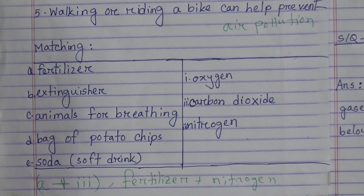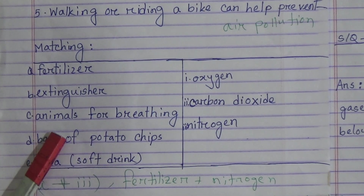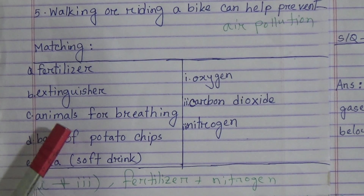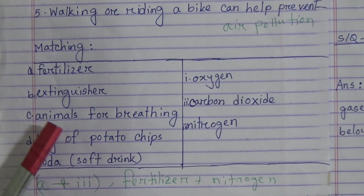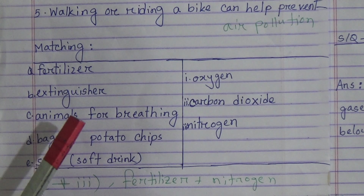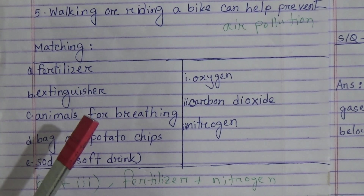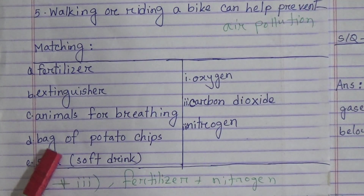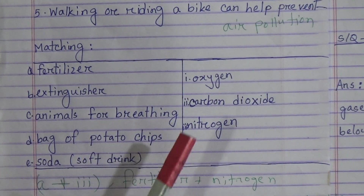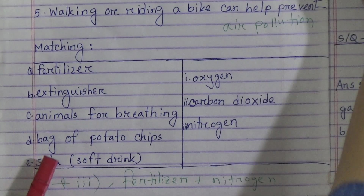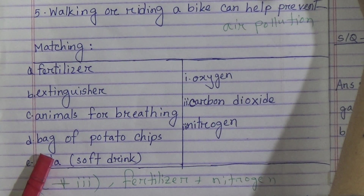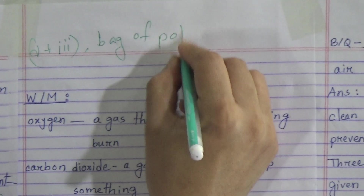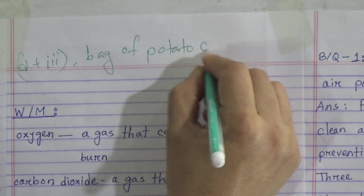Option C — animals for breathing — will be matched with option 1, oxygen. So write C plus 1: animals for breathing plus oxygen. Option D — bag of potato chips — will be matched with option 3, nitrogen. So write D plus 3: bag of potato chips plus nitrogen.